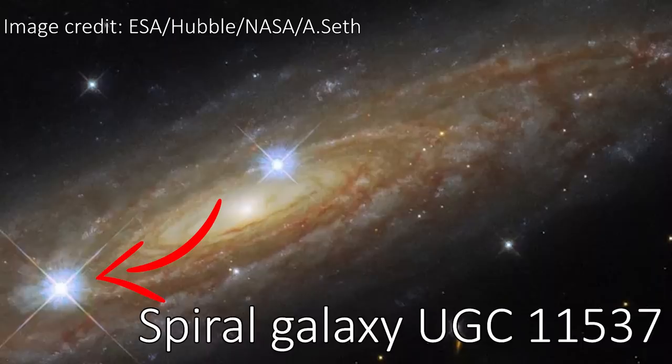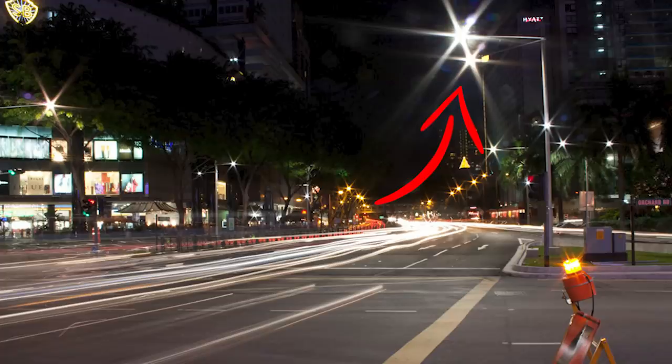Diffraction spikes aren't unique to JWST either. We saw them in images from the Hubble Space Telescope, and you can even see them in photos you take yourself on your camera or phone here on Earth. So what does cause them?